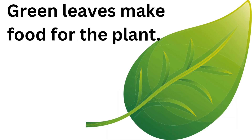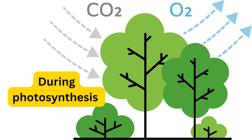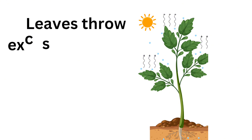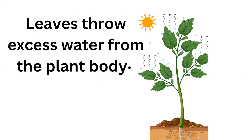Leaf: Green leaves make food for the plants. Leaves also help in respiration. During respiration, leaves take in oxygen and release carbon dioxide. During photosynthesis, they take in carbon dioxide and release oxygen. Leaves also throw excess water from the plant body.